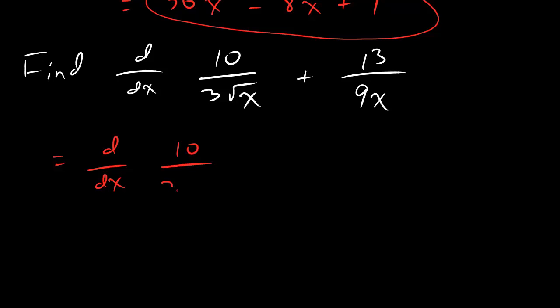So, the first thing that it becomes is ten over three x to the one half. Because that's how we can rewrite square root. And then, how about this guy? Thirteen over nine x. Well, let's be careful here dudes.